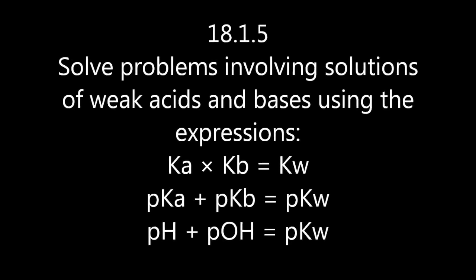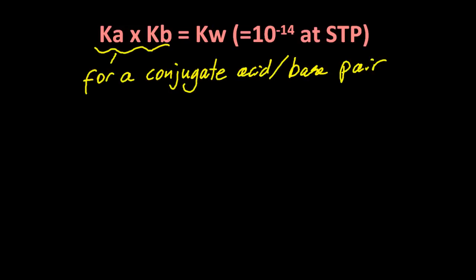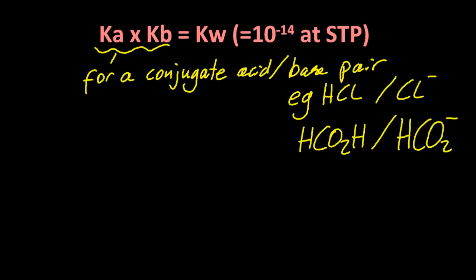Let's solve some problems. Ka times Kb is Kw. And the Ka and the Kb in question are for a conjugate acid-base pair. A conjugate acid-base pair is different by just an H+. So there are three there for you. They're different by H+, each time.